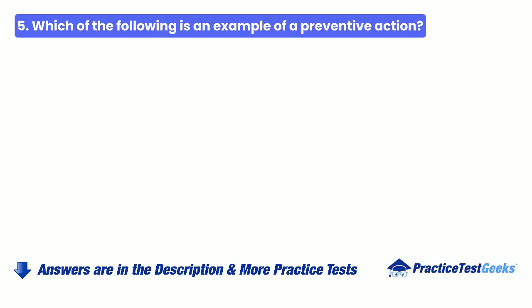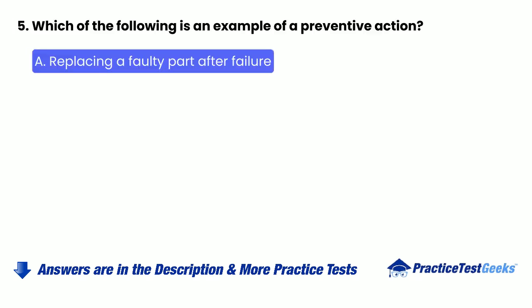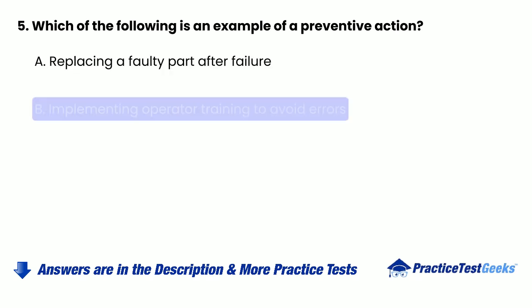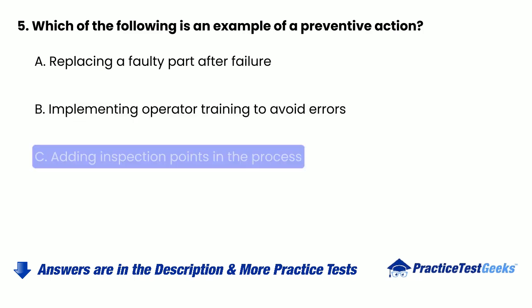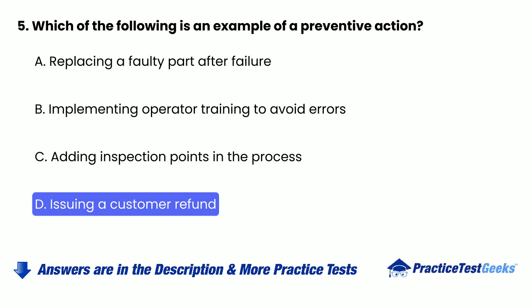5. Which of the following is an example of a preventive action? a. Replacing a faulty part after failure. b. Implementing operator training to avoid errors. c. Adding inspection points in the process. d. Issuing a customer refund.